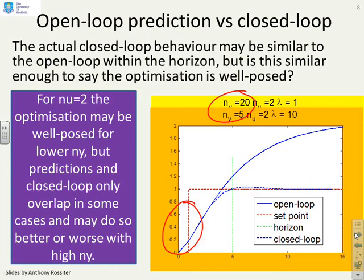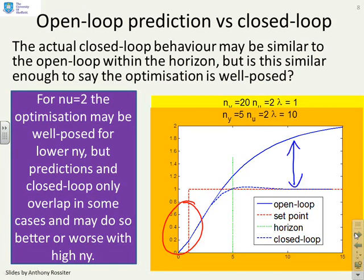Now, here we're showing ny equals 5 and nu equals 2, but we've made the weighting equal to 10 — so we've increased the weighting. And when we've done that, you'll see the difference between the closed loop and the open loop is much bigger. And so how well posed is your optimization? It's not clean. You can't say, oh, this horizon's all right, that horizon's all right. You've got to look at the whole picture.